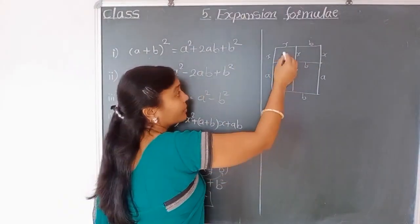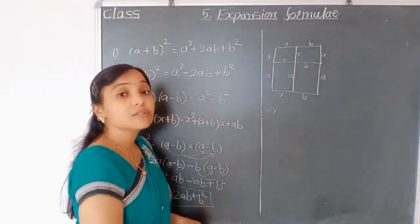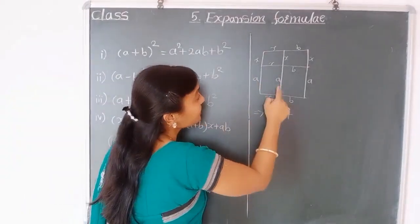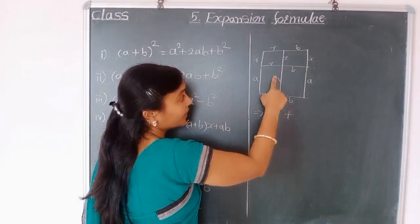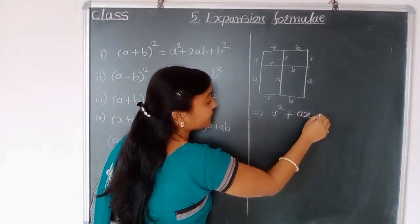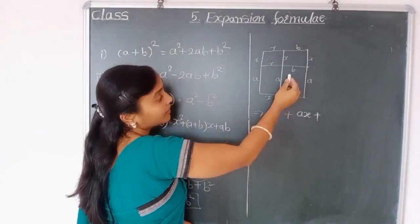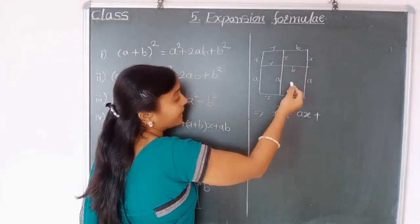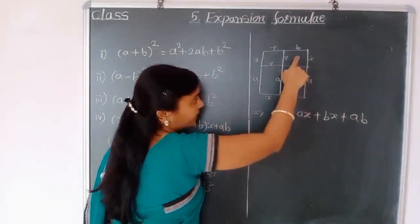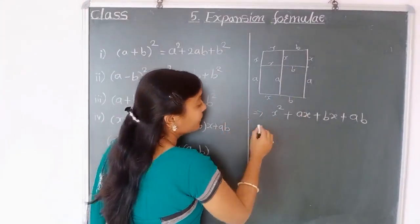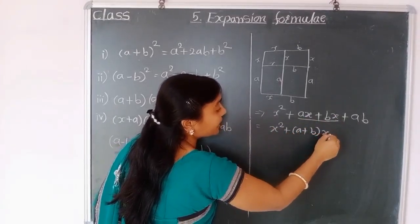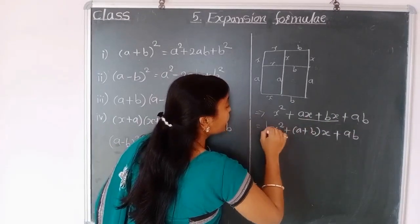So we write the areas: area of the square is x squared, side squared, plus area of this rectangle, a into x, plus area of this rectangle, b into x, plus area of this rectangle, a into b. Taking x as common, we write a plus b, times x, plus ab, and we get our expansion.